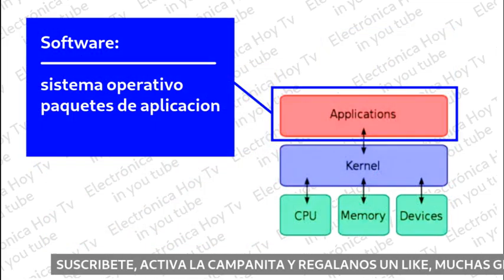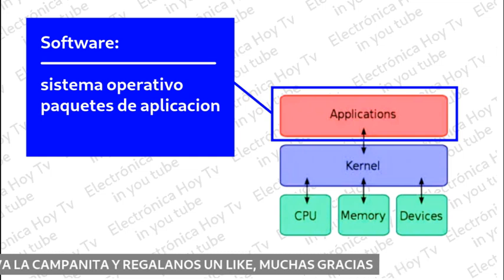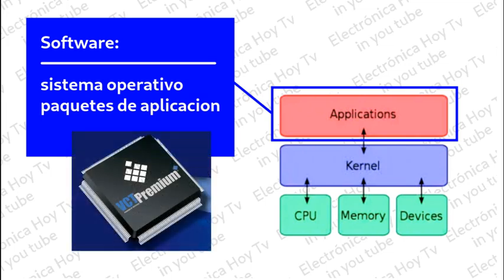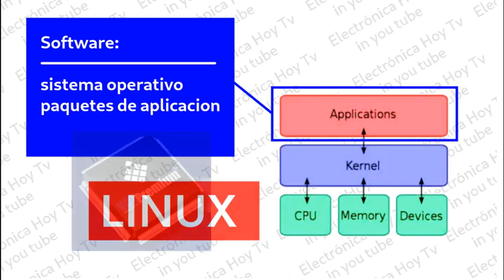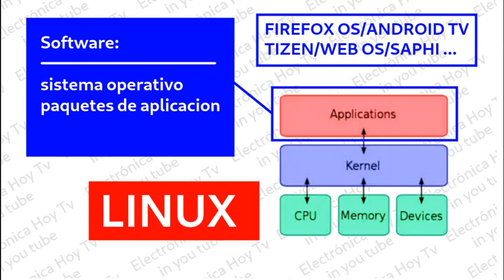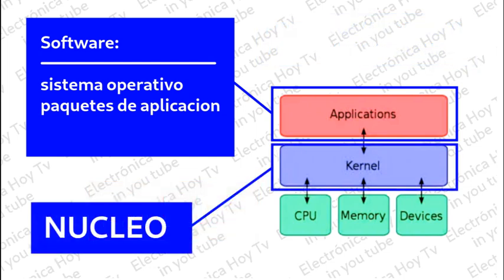Además de esto, está el tercer bloque que es el software. Este consiste en dos partes: los paquetes de aplicación y el sistema operativo. Ambos funcionan exclusivamente dentro del SOC, que, análogamente a la PC, es el procesador de la placa y está diseñado exclusivamente para presentar las imágenes de televisión y el sonido. El sistema operativo siempre está basado en Linux, puesto que Linux es un sistema operativo abierto, libre y gratuito, pero tiene diferentes versiones como Firefox Web, WebOS, Tizen, Android TV, etc. Estos sistemas operativos consisten en las diferentes formas en las cuales la parte digital trabaja sobre el núcleo del sistema, es decir, sobre las entradas y salidas digitales del firmware del sistema.